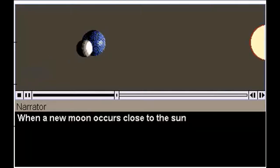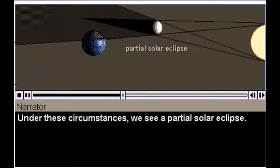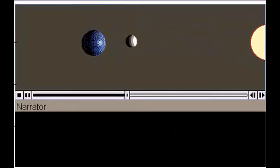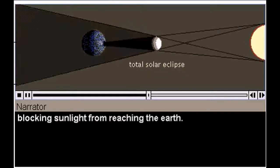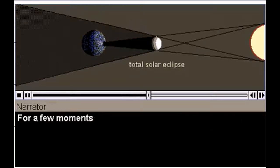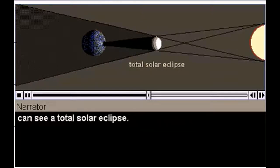When the Moon occurs close to the Sun, the Sun's light is partially obscured. Under these circumstances, we see a partial solar eclipse. On rare occasions, the Moon moves directly between the Sun and the Earth, blocking sunlight from reaching the Earth. For a few moments, people standing at certain places on the Earth can see a total solar eclipse.